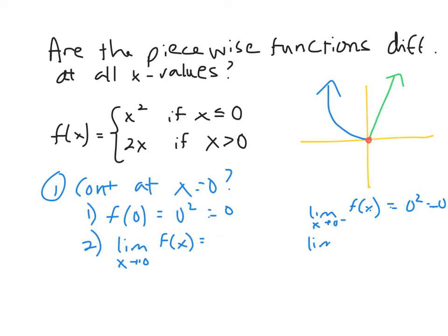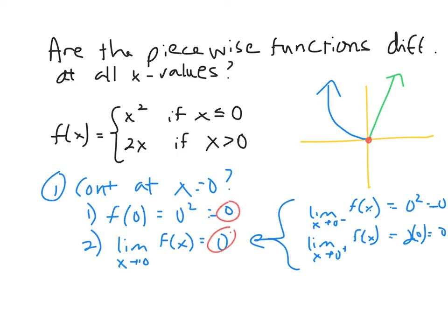The limit as x approaches zero from the right uses the other piece, 2x: 2 times 0 is zero. Since both one-sided limits equal zero, the overall limit is zero. Comparing the functional value and the limit, we see f(0) equals the limit as x approaches zero of f(x).